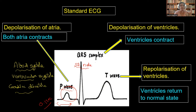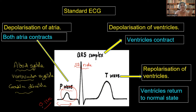Whenever the SA node sends the initiation signals of contraction, the atria start contracting — what we call atrial systole — and this atrial systole is represented by P wave. It lasts for about 0.1 seconds.